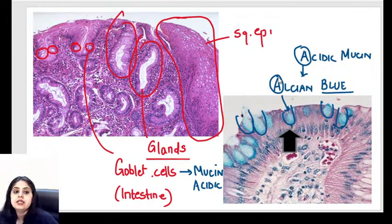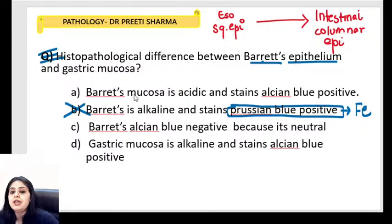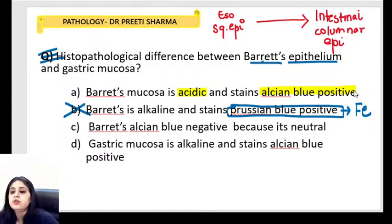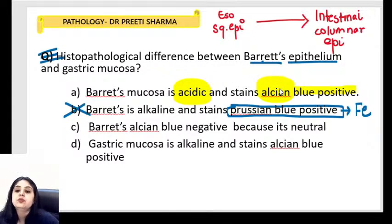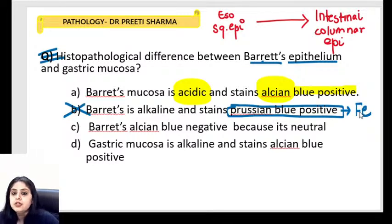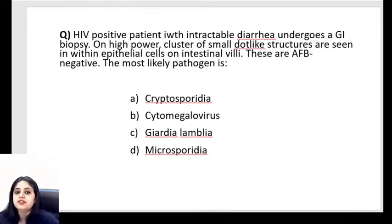So Barrett's mucosa has acidic mucin and is alcian blue positive — that is the correct answer, option A. It is not neutral, not alkaline, and not Prussian blue positive. Option B (Prussian blue, alkaline) does not fit at all. Barrett's esophagus = acidic mucin = alcian blue positive.